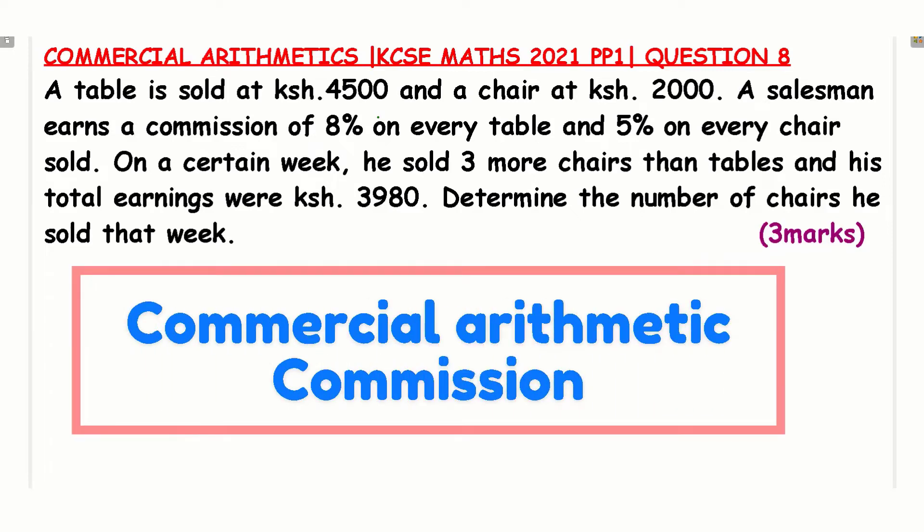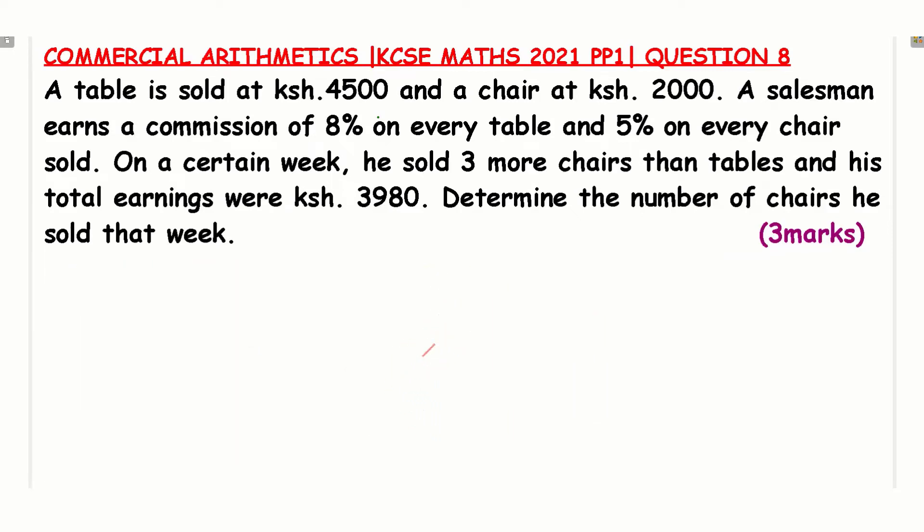A table is sold at 4,500 shillings and a chair at 2,000 shillings. A salesman earns a commission of 8% on every table and 5% on every chair sold. On a certain week, he sold three more chairs than tables and his total earnings were 3,980 shillings. Determine the number of chairs he sold that week. 3 marks.